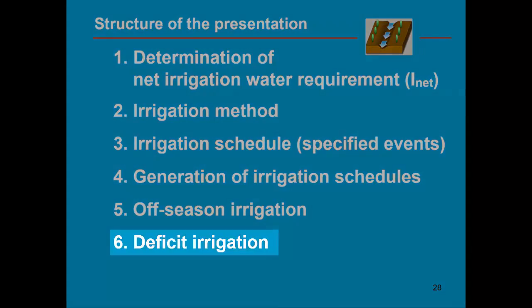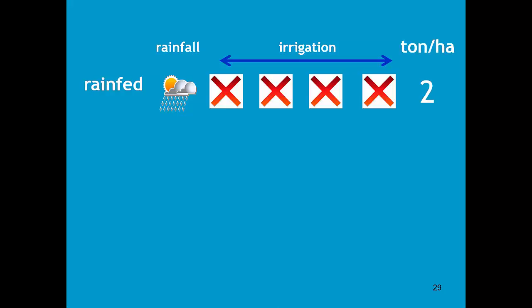Let me further discuss the concept of deficit irrigation. Under rainfed conditions, without any irrigation, yield might be rather low. For example, 2 tons per hectare.